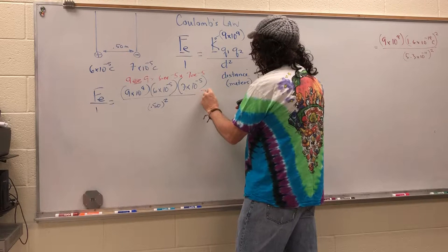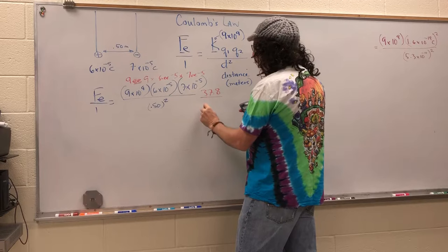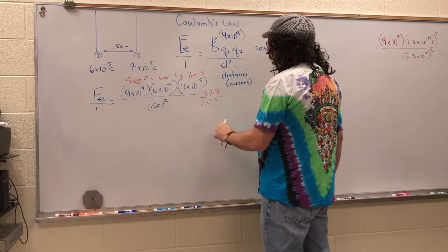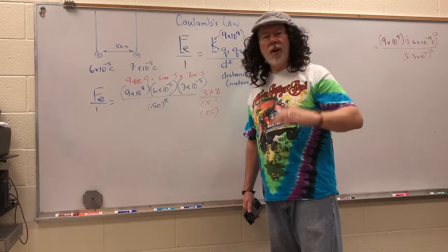The answer for the numerator would be 37.8. That's still got to be divided by 0.5 squared. Now, if you know, you could do this in your head: 0.5 squared should be 0.25.